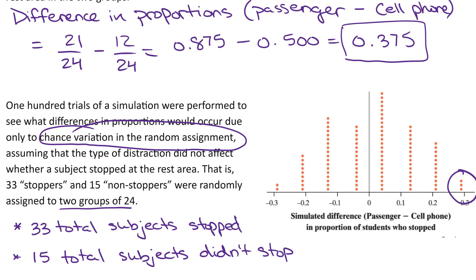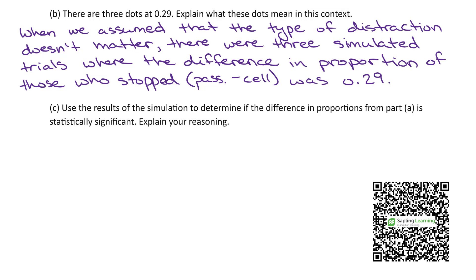The simulation gives us an opportunity to regenerate more and more samples and see what would happen, assuming 33 students would stop and 15 would not, in any group of 48. The dot plot represents 100 such situations. So to wrap up Part B: when we assumed that the type of distraction doesn't matter, there were three simulated trials — those three dots at 0.29 — where the difference in the proportion of those who stopped (passenger minus cell phone) was 0.29.